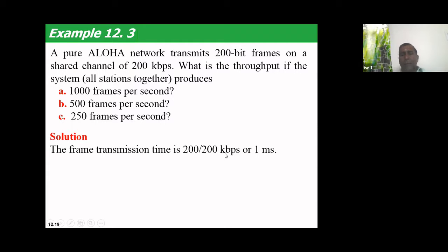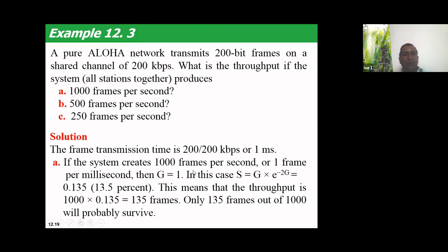The 200s cancel and kilo means 10 to the power 3, so this becomes 10 to the power minus 3 seconds, which is 1 millisecond. If the system is sending 1000 frames per second, then one frame is sent per millisecond, so G equals 1.